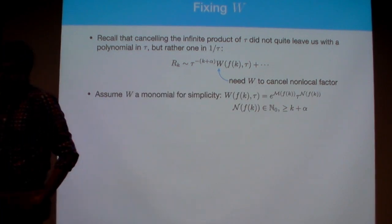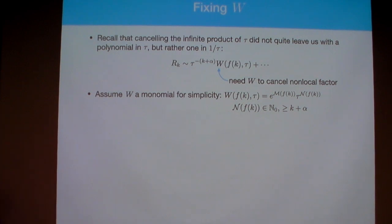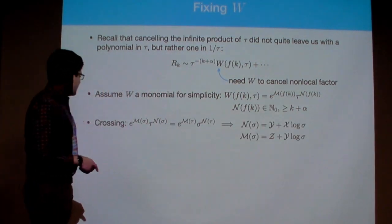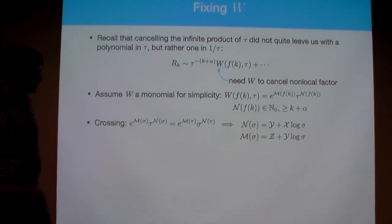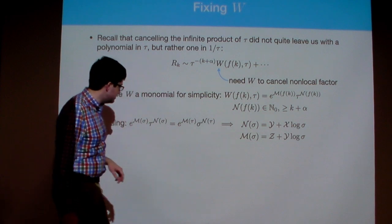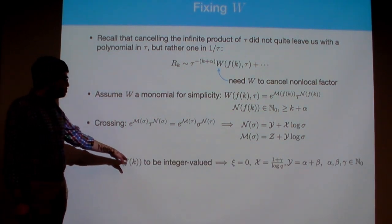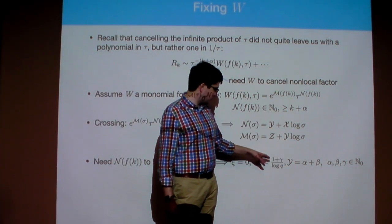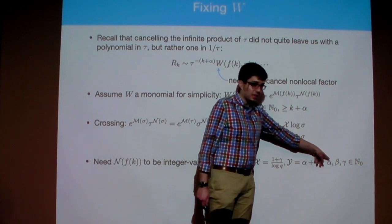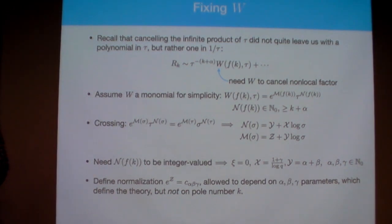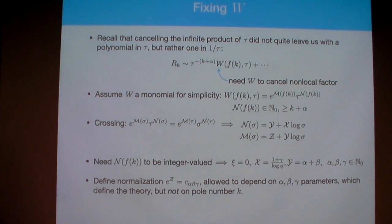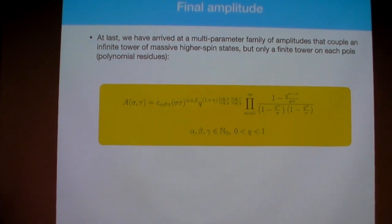We fix the constants A, B, C, D using the definition of F: F of 0 equals 1 and F of infinity equals 0. We also require F to be monotone, so Q must be real, positive, and not equal to 1. There's also an invariance under Q to 1/Q that just swaps A, B, C, D, so without loss of generality we take Q less than 1. We then have a general form for F with one more free parameter, Xi, which we fix by enforcing crossing symmetry and requiring N to be integer-valued down the pole. This fixes Xi equals zero.